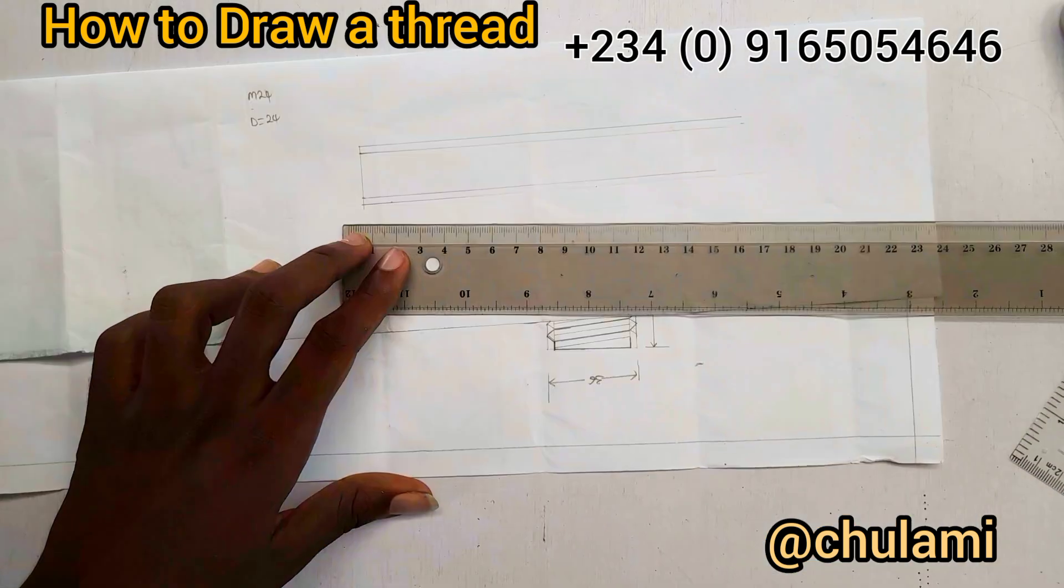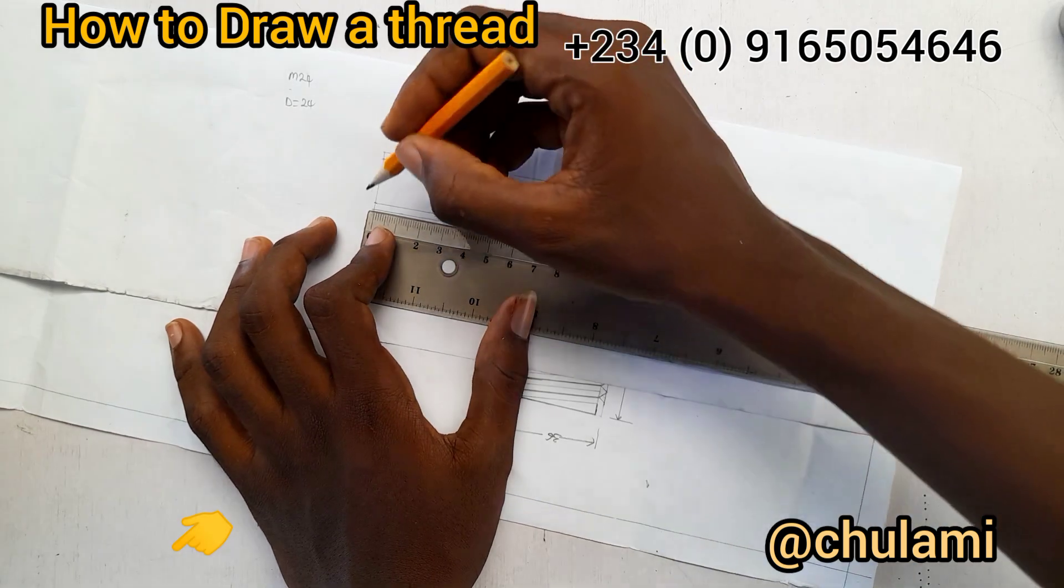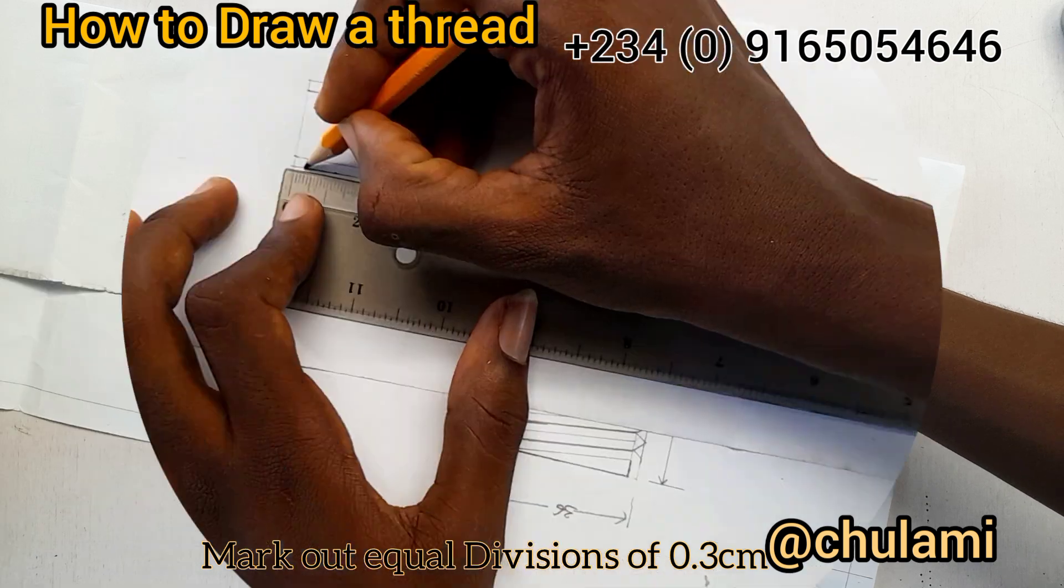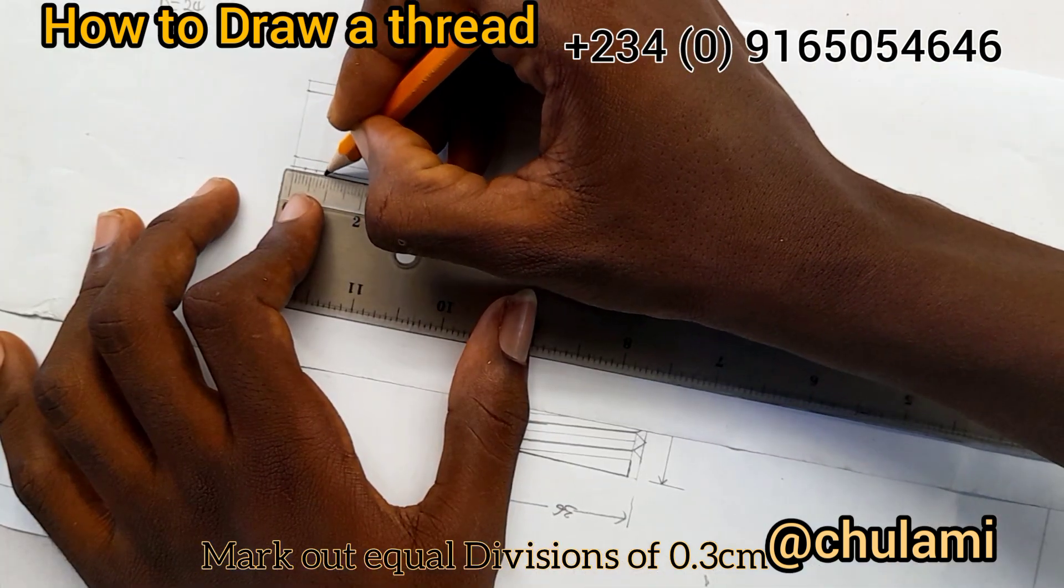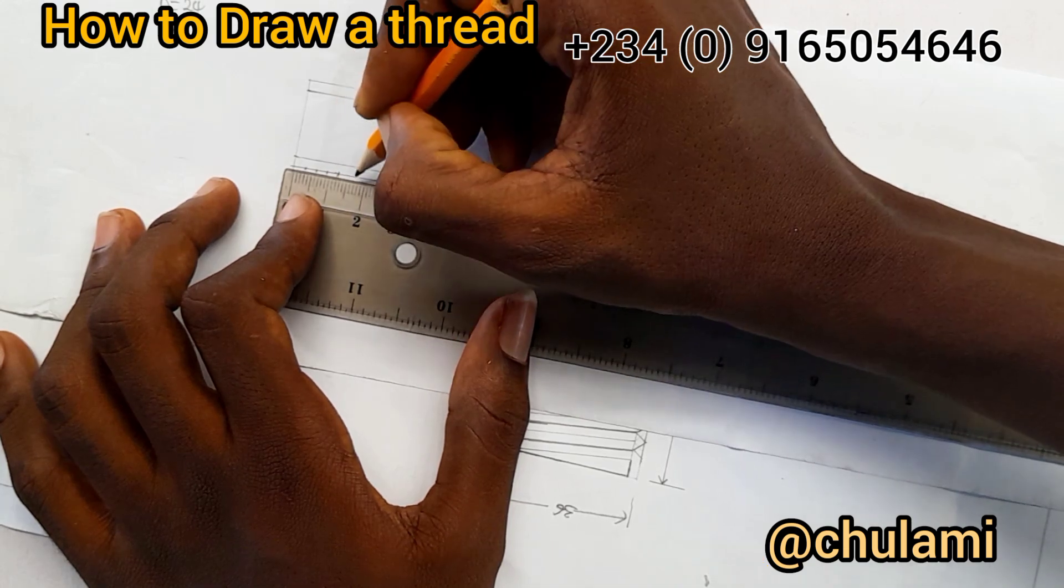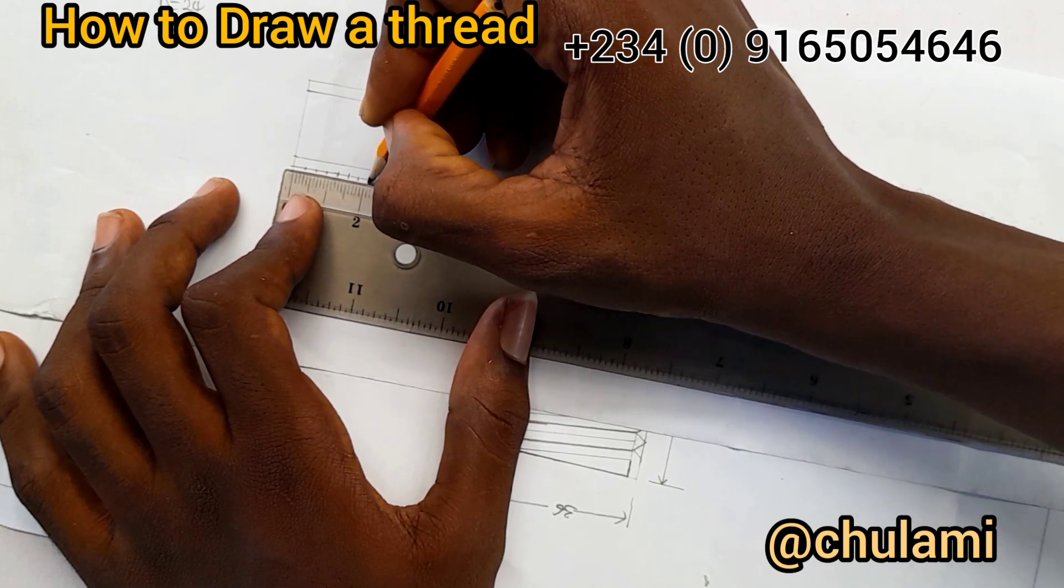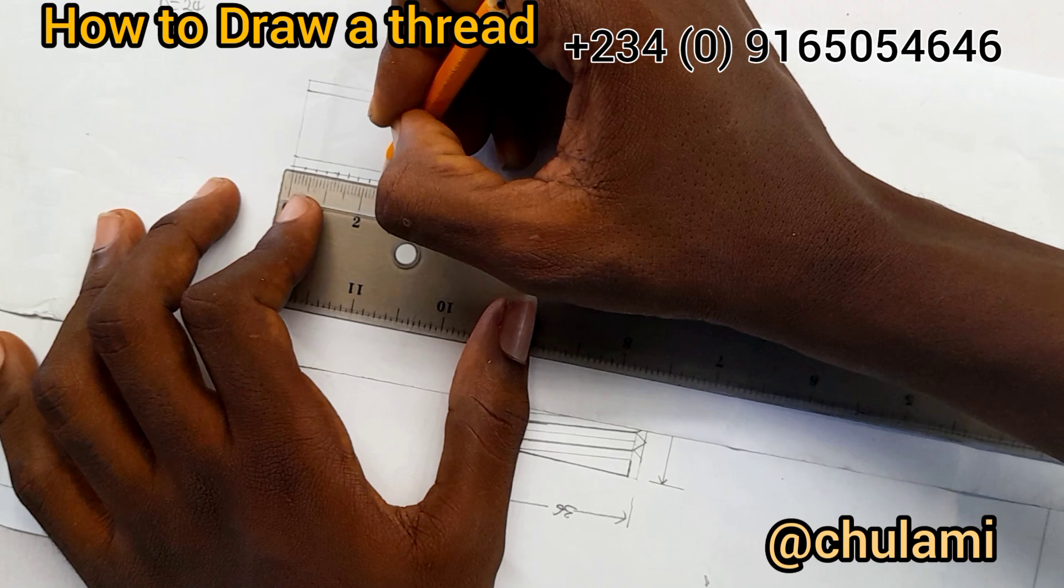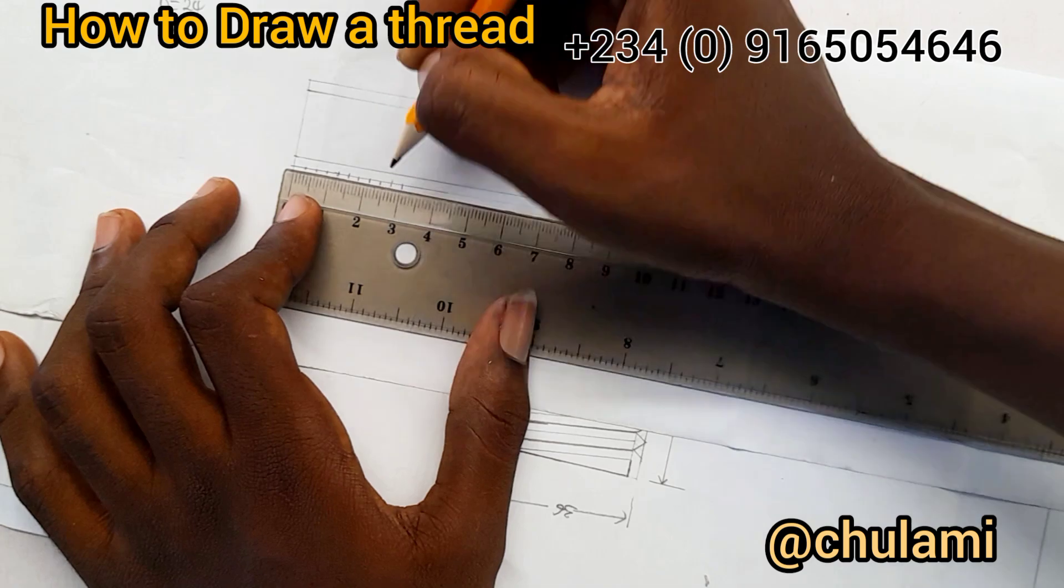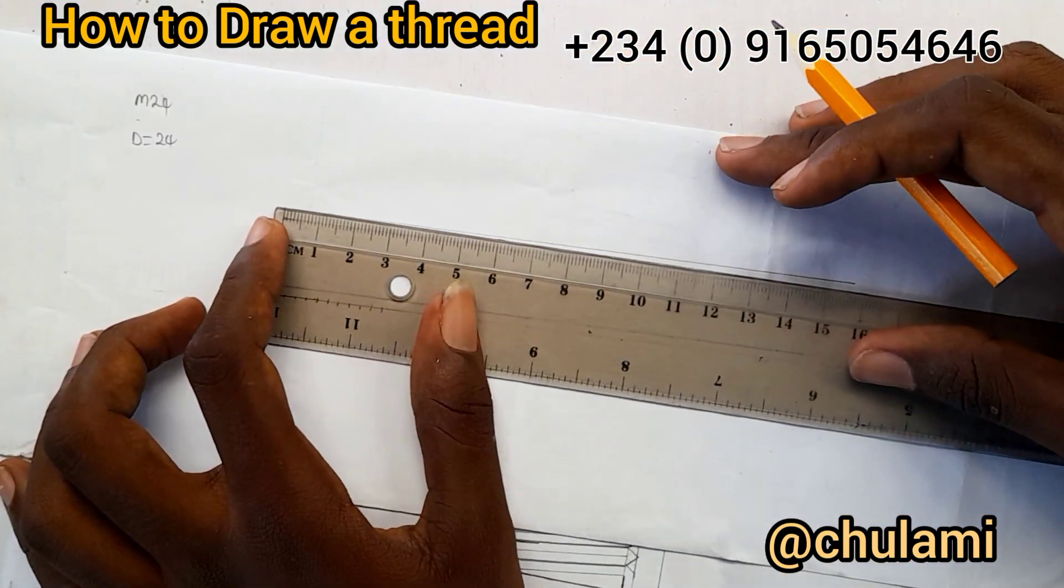All right, so having done that, okay, starting from this point I want to measure 0.3, okay, 0.3 downwards to one. So 0.3, okay, we'll give equal measurement of 0.3cm. 0.3, okay, 0.3, okay. So I'll stop here for now. I'll do the same thing to up, 0.3, okay.